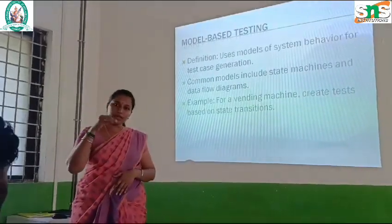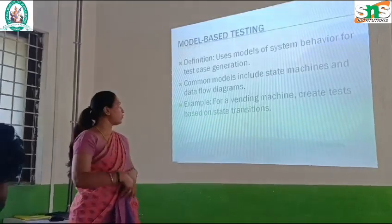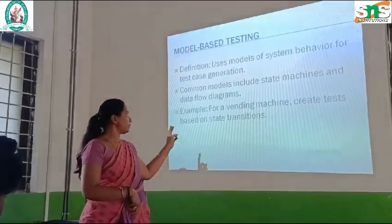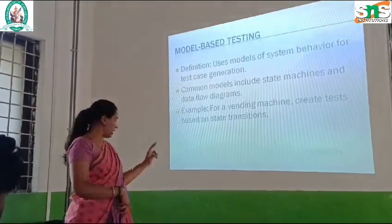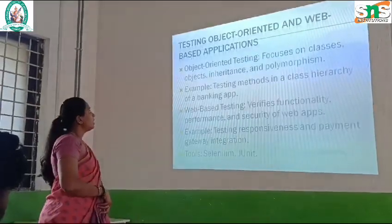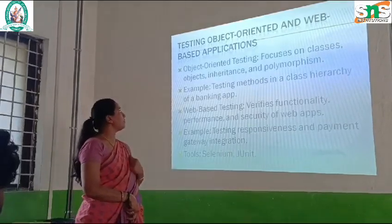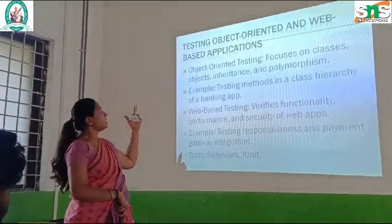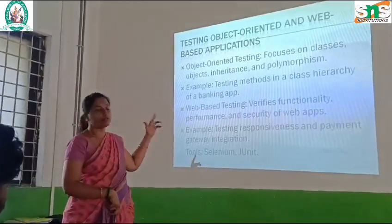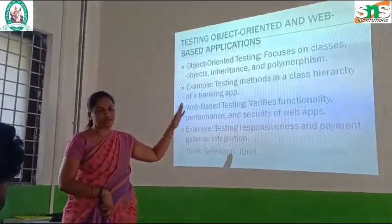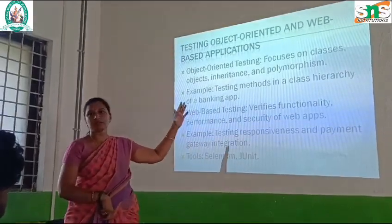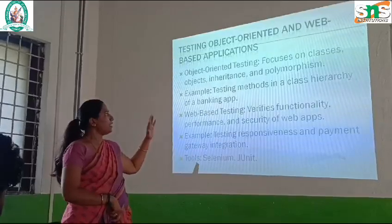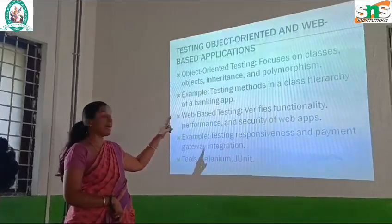State machines allow data flow. In covering the steps, the flow will go. Example: a vending machine — create tests based on state transitions. Testing object-oriented and web-based applications. Web-based application testing: object-oriented focus on classes, objects, and methods of the class.